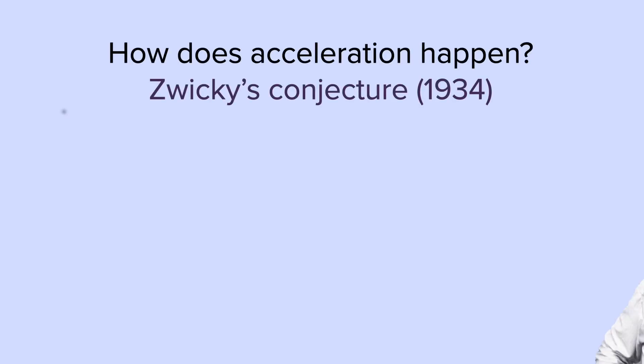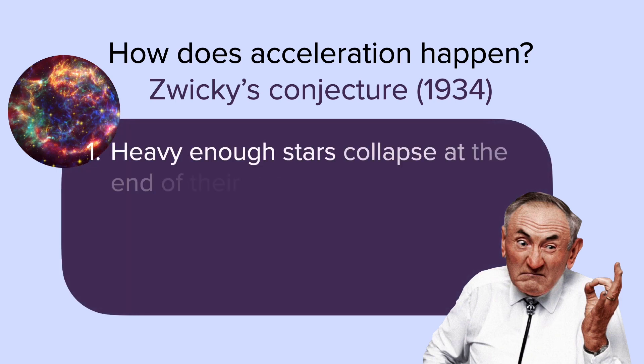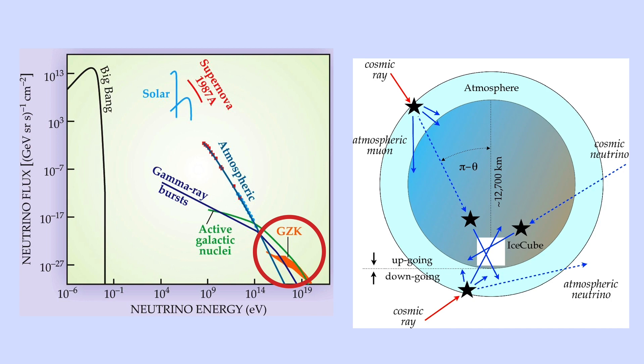How does acceleration happen? If we take a look at Zwicky's conjecture from 1934, first, we needed heavy enough stars to collapse at the end of their lives into supernovae. Then, implosions produce explosions of cosmic rays. And third, they leave behind neutron stars.